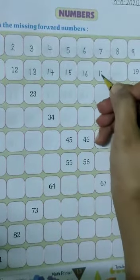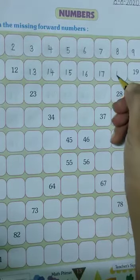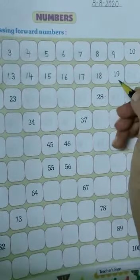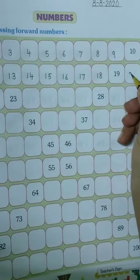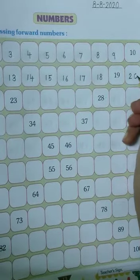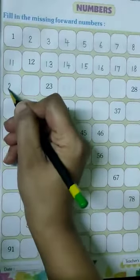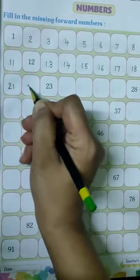18. After 19, write 20 in this box. Then write 21, 22.